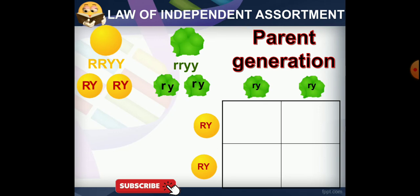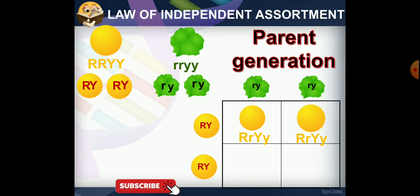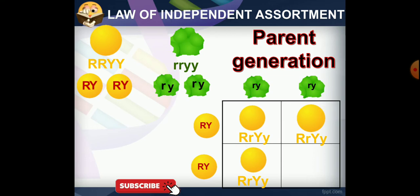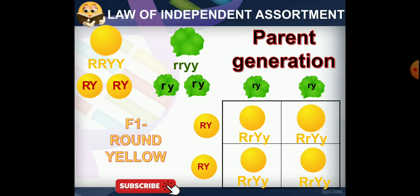In the F1 generation, all offspring are capital R small r, capital Y small y — heterozygous round yellow. Capital R capital Y is dominant, giving round yellow. Capital R small r, capital Y small y again gives round yellow as capital R is dominant. All F1 offspring are round yellow.